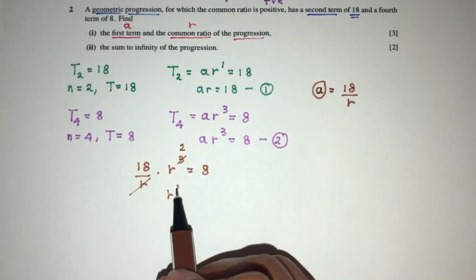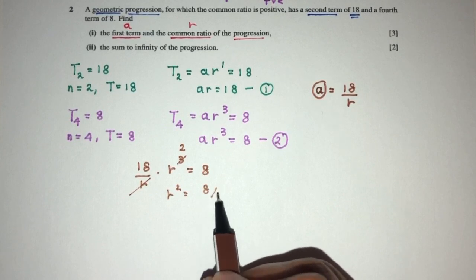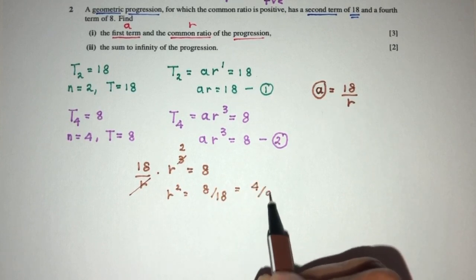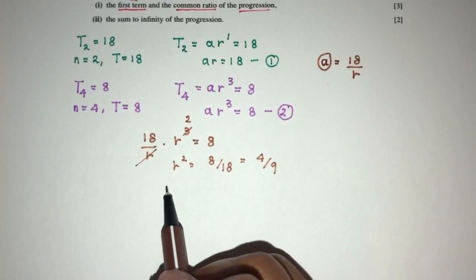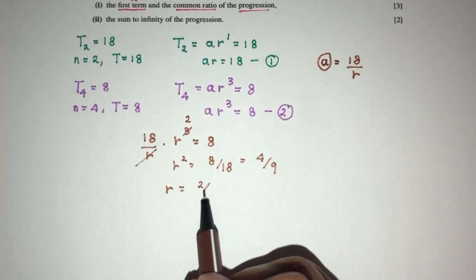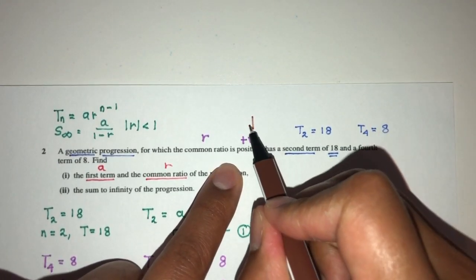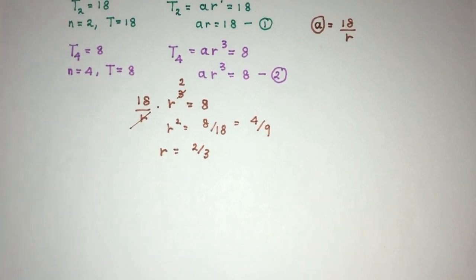You will have r^2 will be 8 over 18 divided by 2. That will be 4 over 9. So, here you can see r have to be the value of 2 over 3. Because we know the common ratio is positive, we will not take into account the negative value. We will only take this one back.